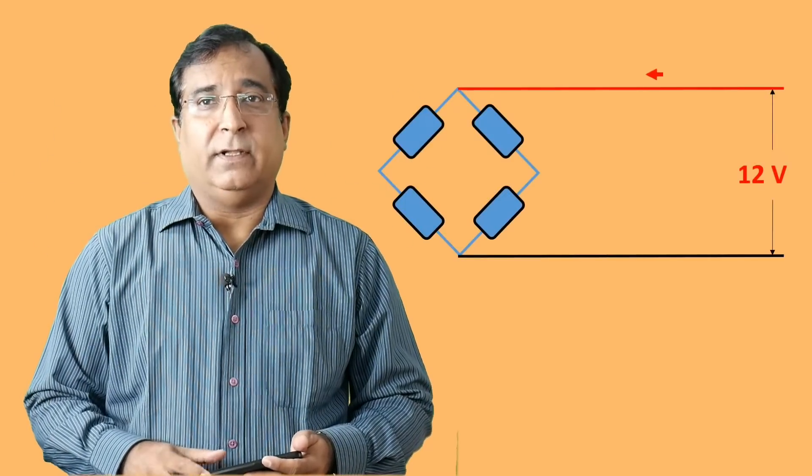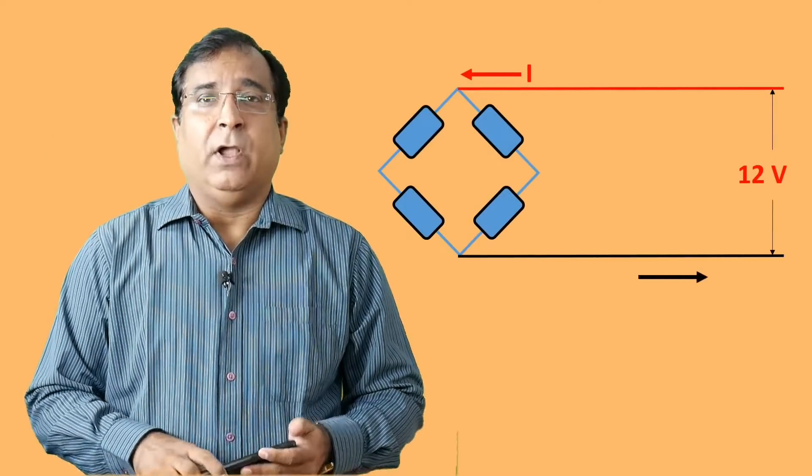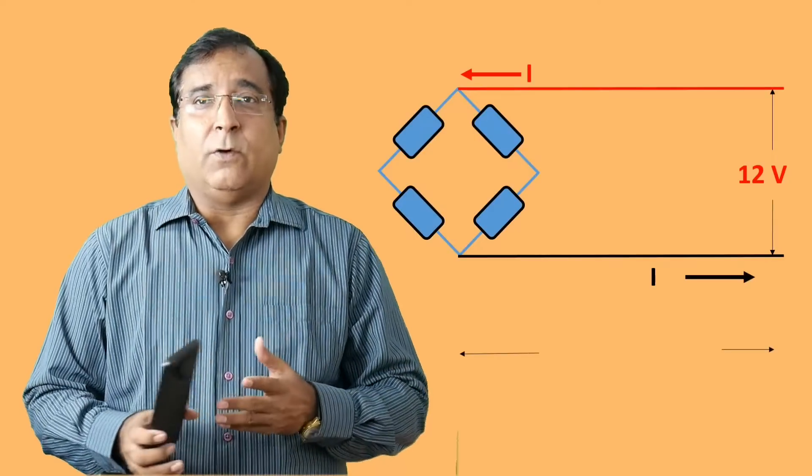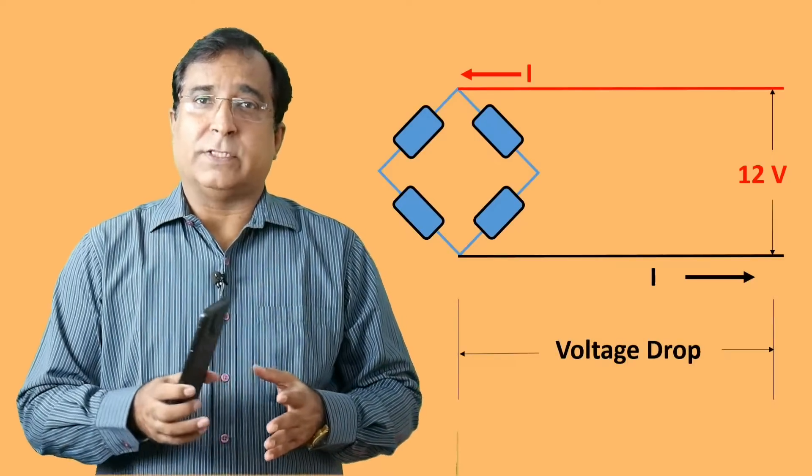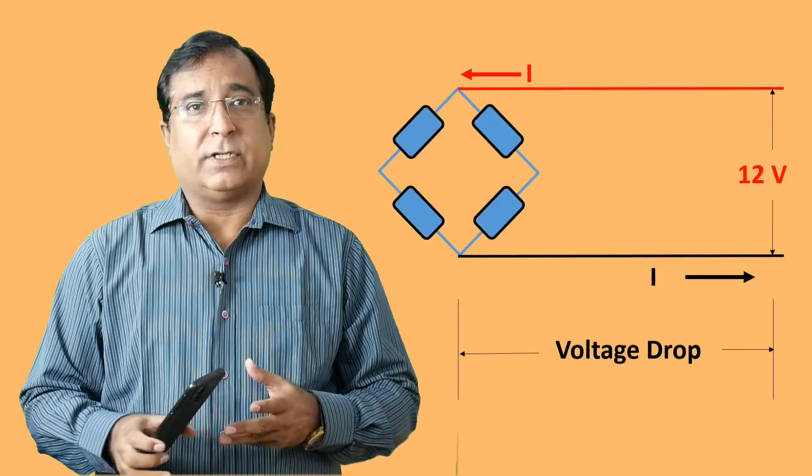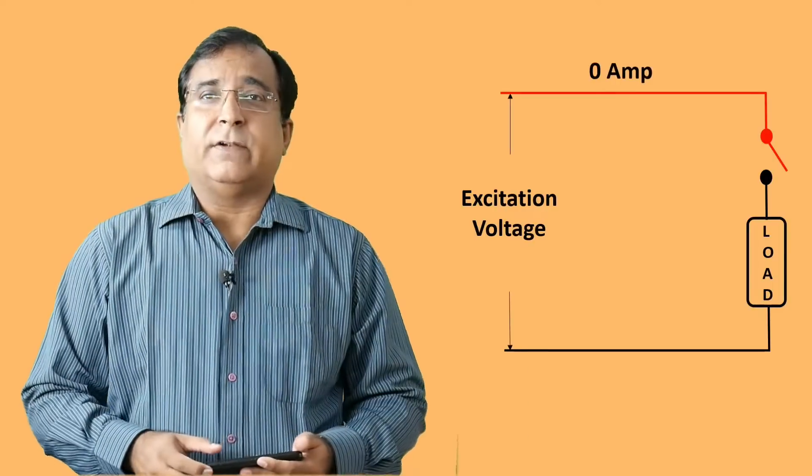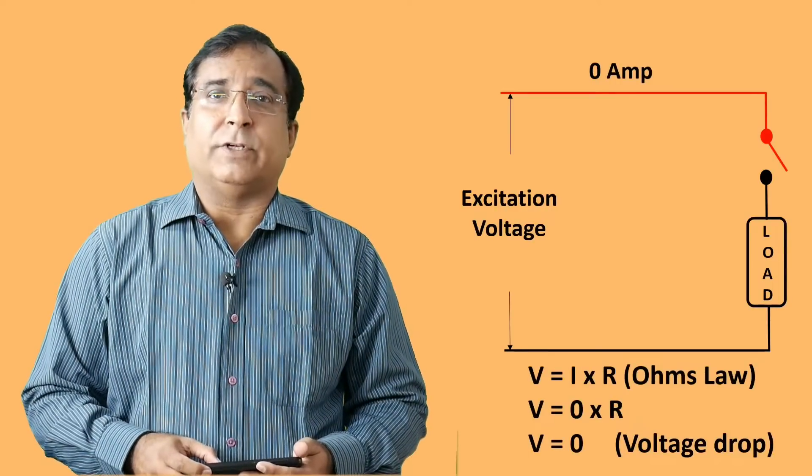As long as there is no weight applied on the load cell, its Wheatstone bridge is balanced and the signal output is considered to be 0 millivolt. As soon as you put a load on the load cell, the bridge gets unbalanced and a millivolt signal output is generated and it causes current to flow in the bridge circuit. Now as per Ohm's law, this current flow causes a considerable voltage drop across its cable length. Resulting you get a less excitation voltage than it is supposed to be.